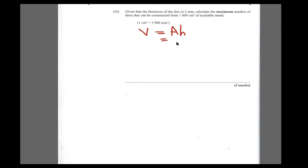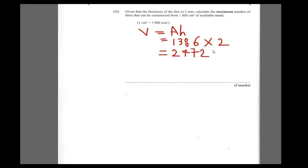The cross-sectional area we found was 1386 mm², and the thickness is 2 millimeters. So the volume is 1386 × 2 = 2772 mm³.